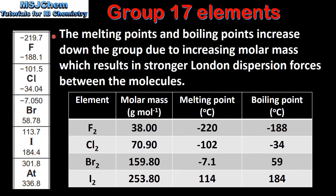The melting points and boiling points of the group 17 elements increase down the group, due to increasing molar mass which results in stronger London dispersion forces between the molecules. In this table we have the element, its molar mass, its melting point, and its boiling point. As we can see, as the molar mass increases so does the melting point and the boiling point.